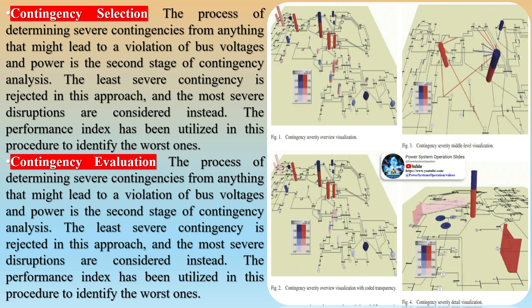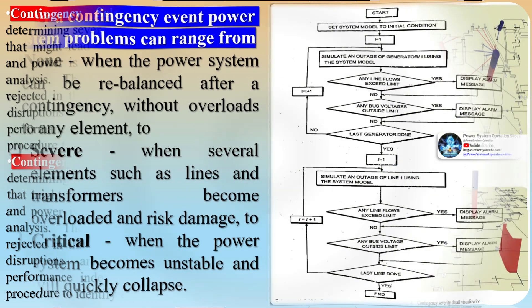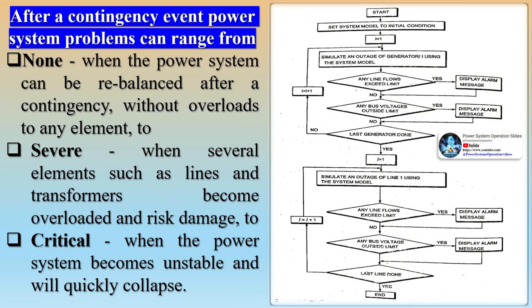For a power system to be secure, it must have continuity in supply without a loss of load. Security analysis is performed to develop various control strategies to guarantee the avoidance and survival of emergency conditions, and to operate the system at lowest cost. Whenever the pre-specified operating limits of the power system are violated, the system is said to be in an emergency condition. These violations result from contingencies occurring in the system.